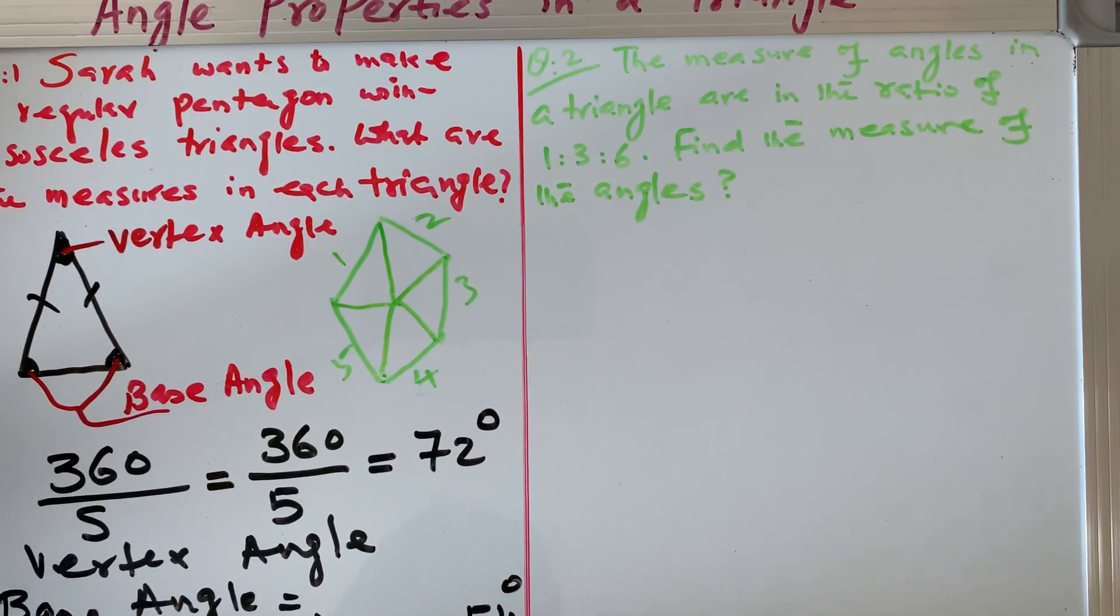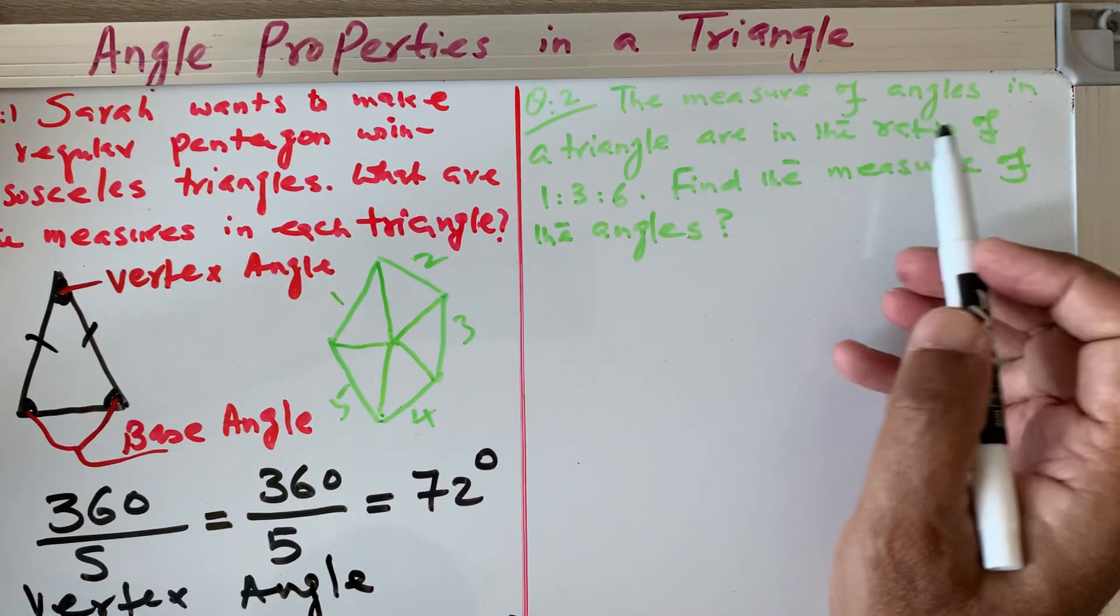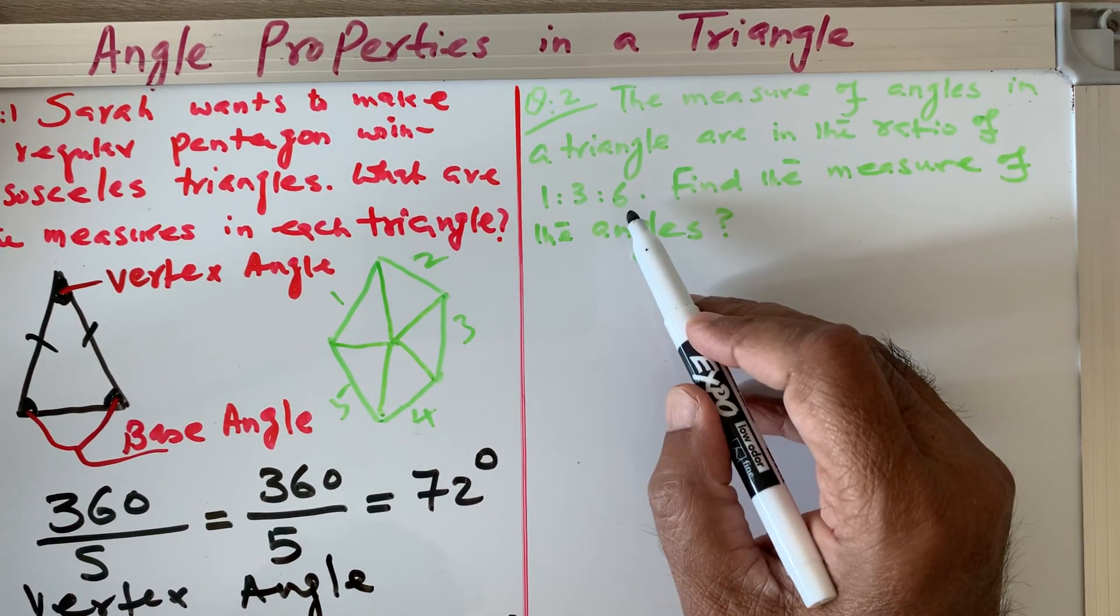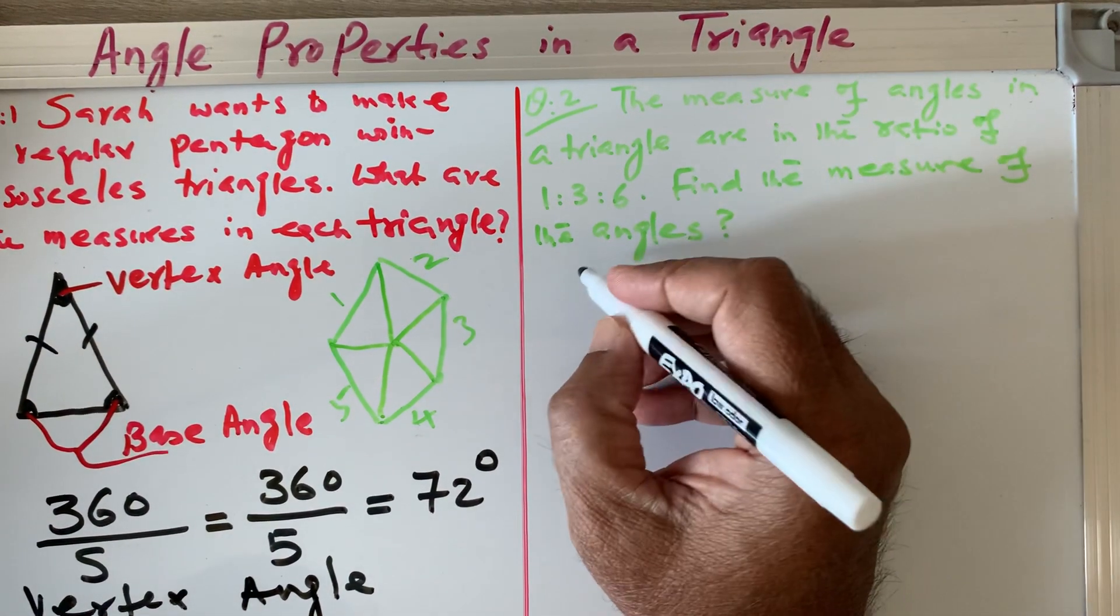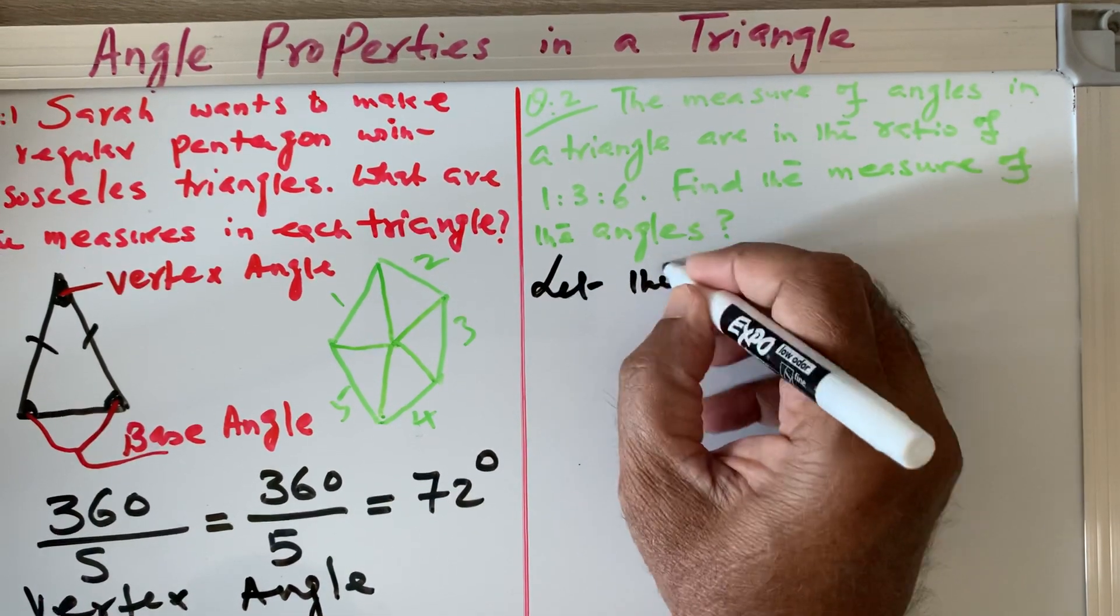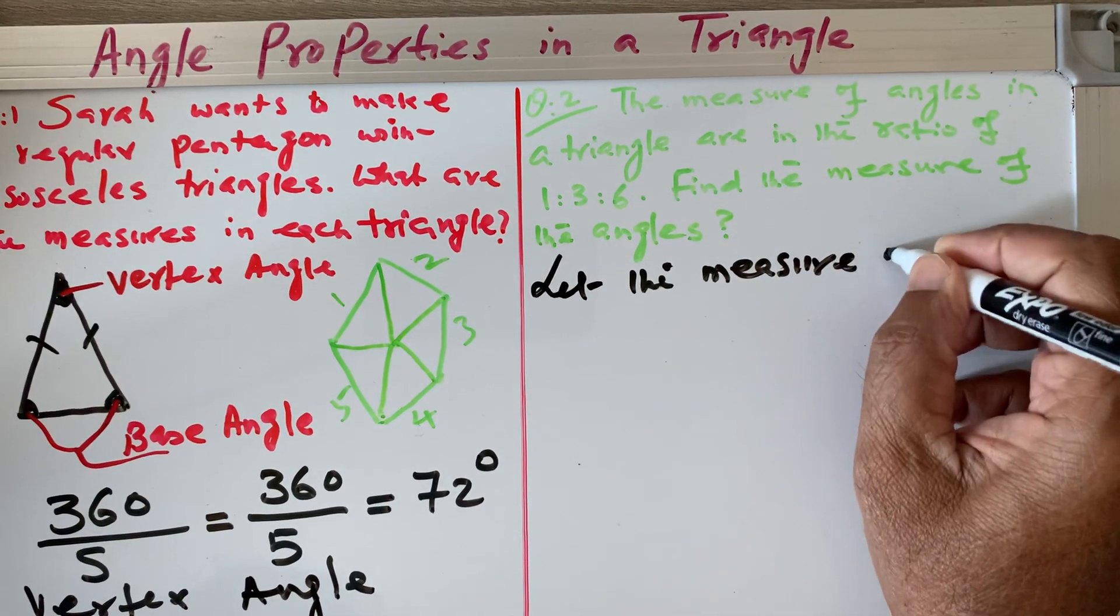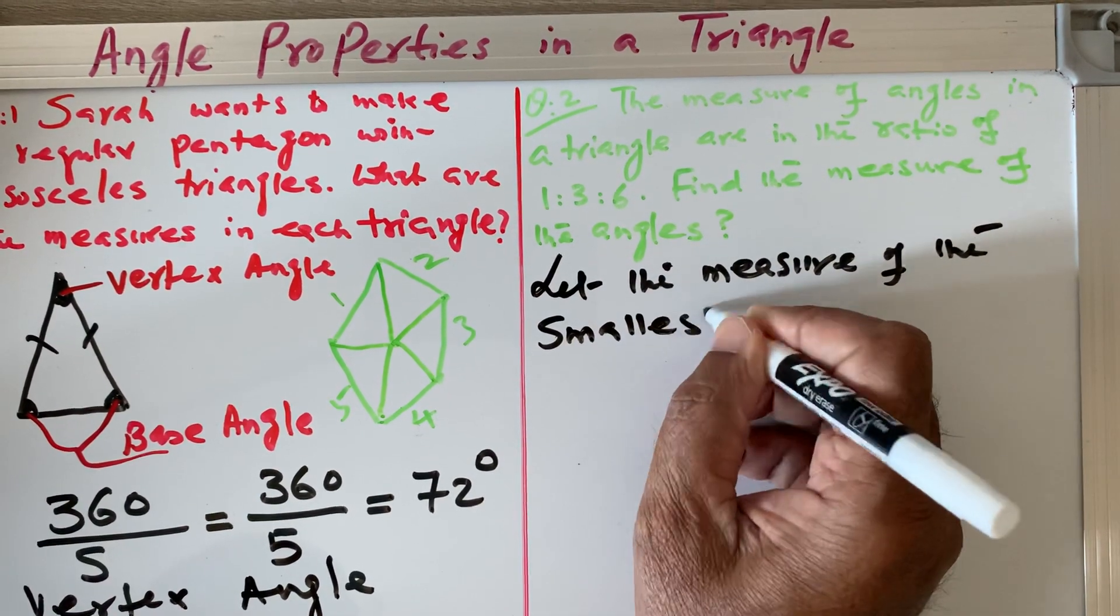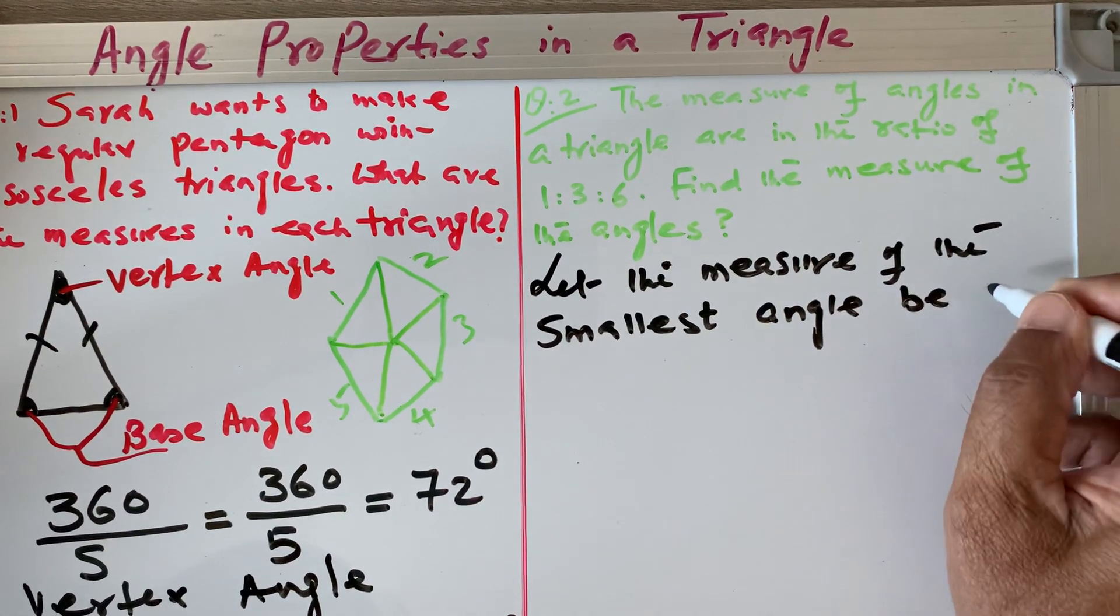Now we go to the second question and see what it says. Second question here says the measure of angles in a triangle are in the ratio of 1 is to 3 is to 6. Find the measures of the angles.